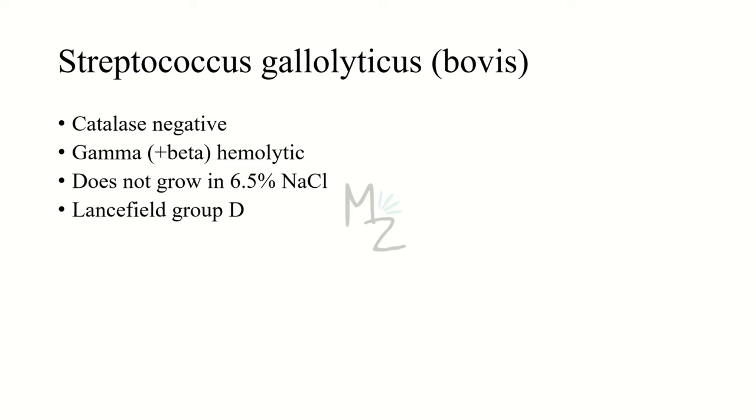Strep gallolyticus or Strep bovis is catalase negative. We're going to talk about that catalase test in lab diagnosis section. This bacterium is gamma hemolytic, but sometimes it also shows alpha hemolysis or beta hemolysis on sheep blood agar plate.